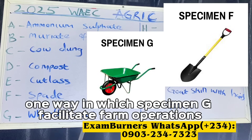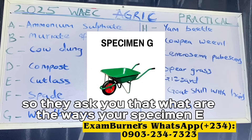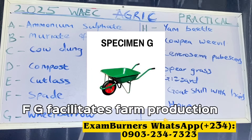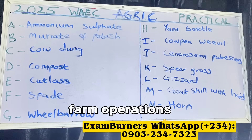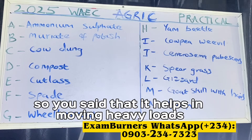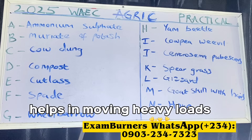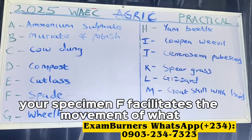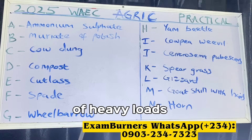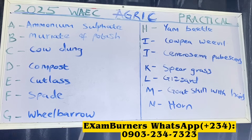State one way in which specimen G facilitates farm operations. Specimen G, the wheelbarrow, helps in moving heavy loads. So specimen G facilitates farm operations by helping in the movement of heavy loads on the farm.